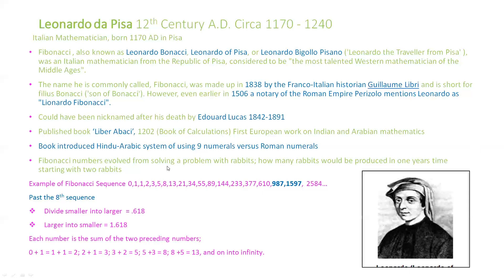It's also thought that Leonardo solved a problem for the royal family: how many rabbits would be produced in one year starting with two rabbits — and that brings us to the Fibonacci sequence. If you're not familiar with it, it's actually fairly simple. You take one number and add it to the previous: zero plus one equals one, one plus one equals two, two plus one equals three, and so on, all the way into infinity.